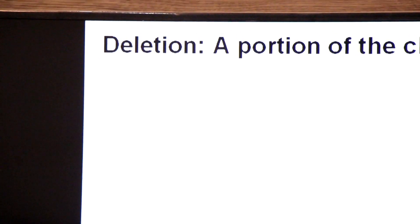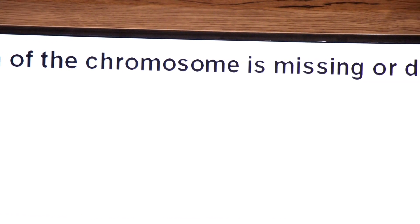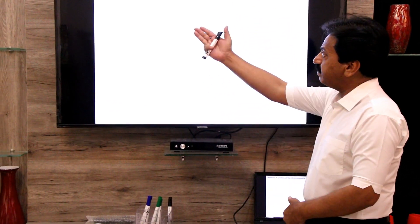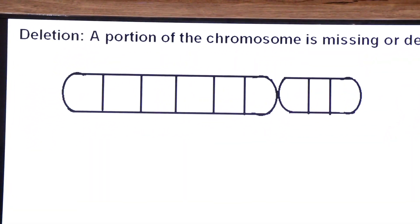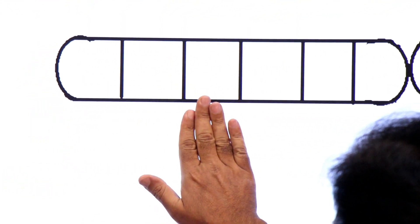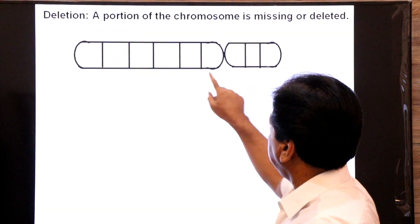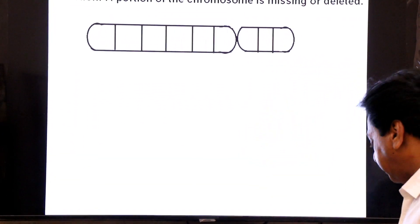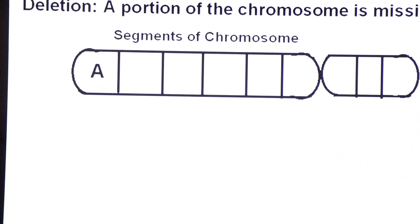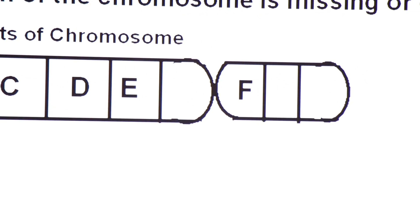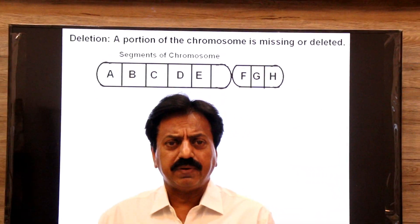The first type is deletion. A portion of the chromosome is missing or deleted. One segment of the chromosome is lost, and since each segment contains many genes, many genes are lost. Looking at the diagram, a chromosome has many segments: segment A, segment B, segment C, segment D, segment E, segment F, segment G, and segment H.